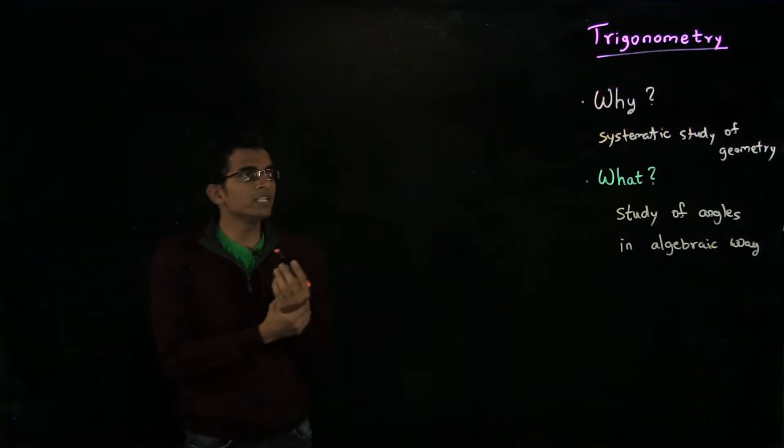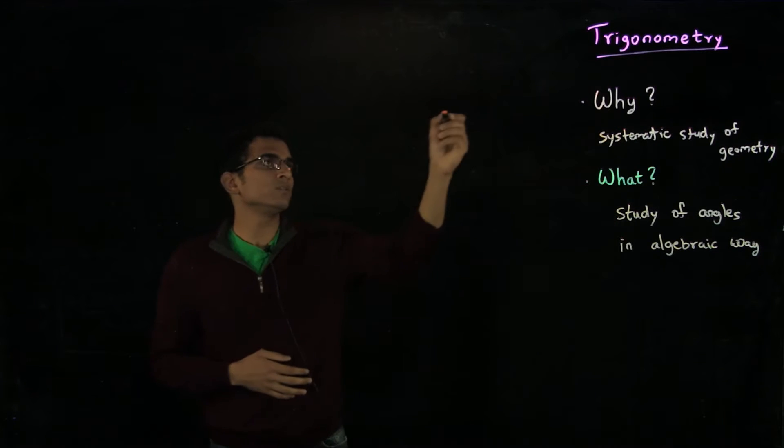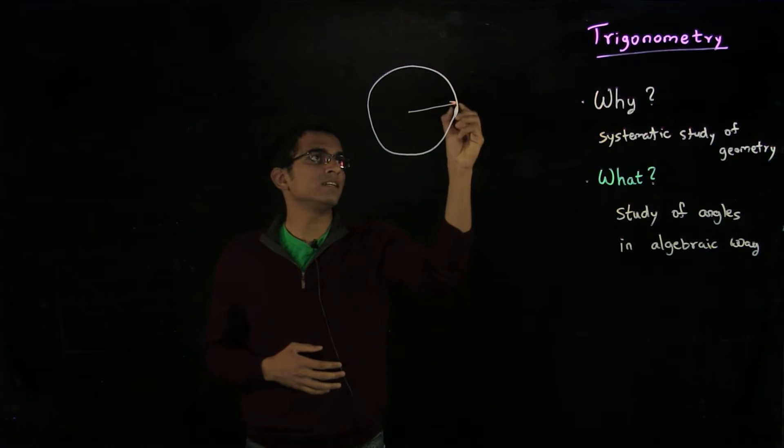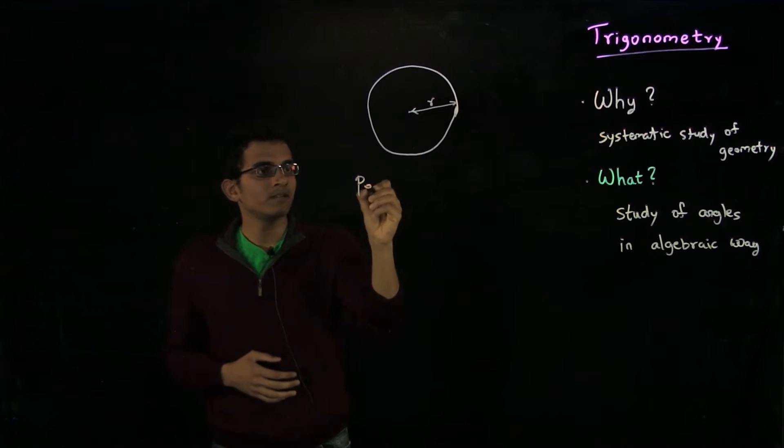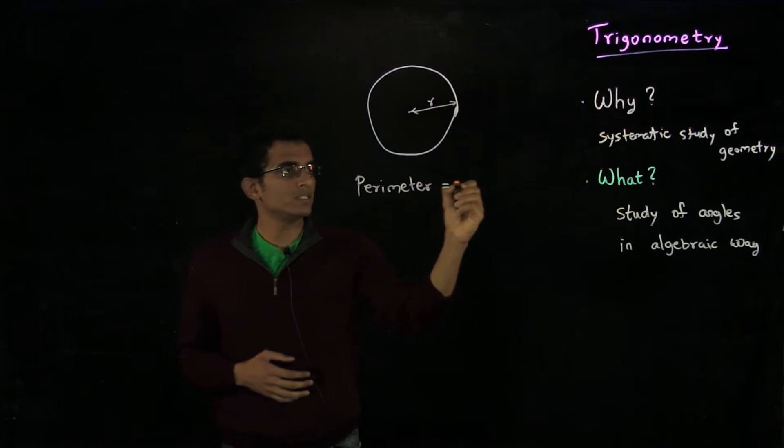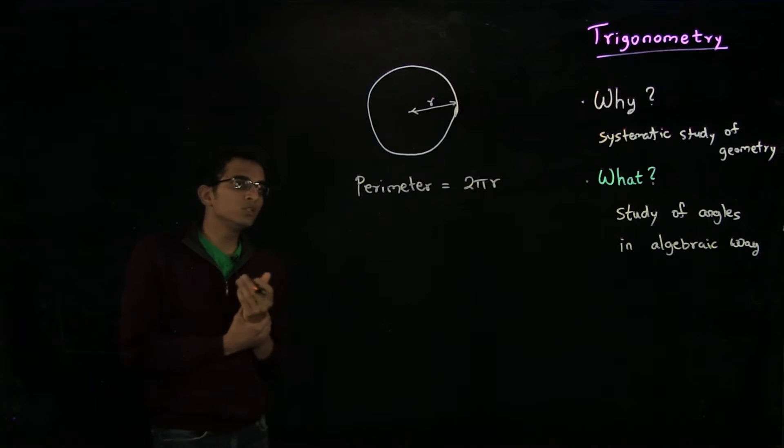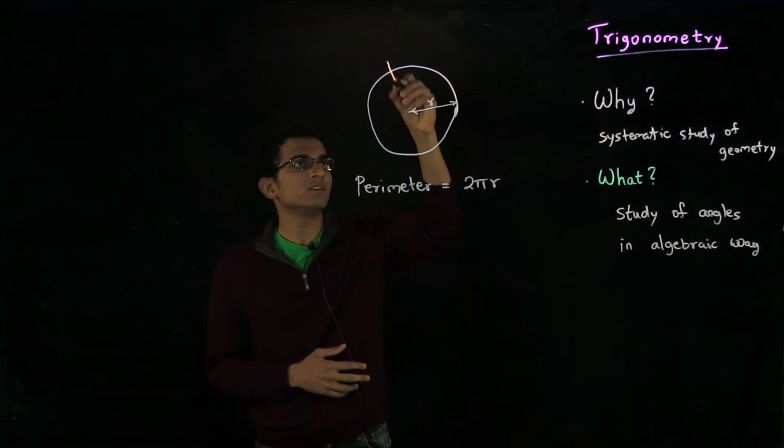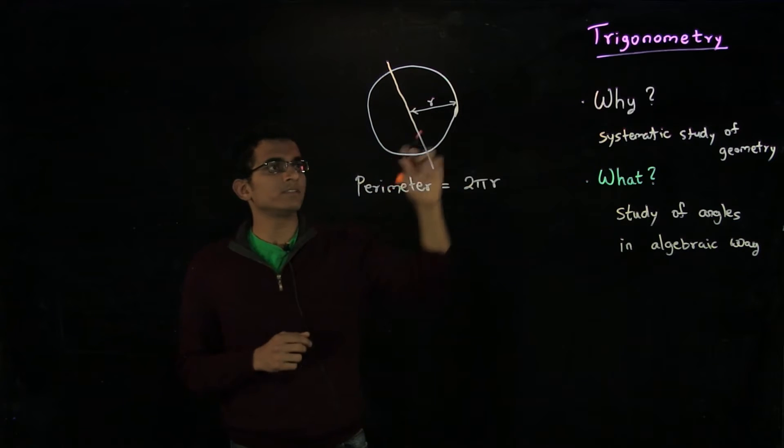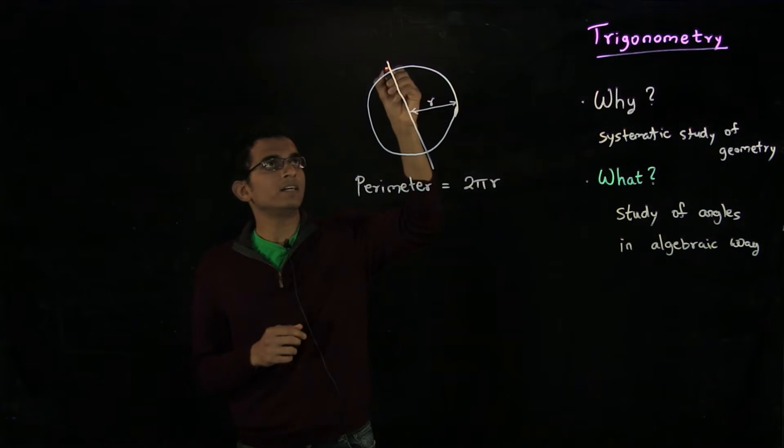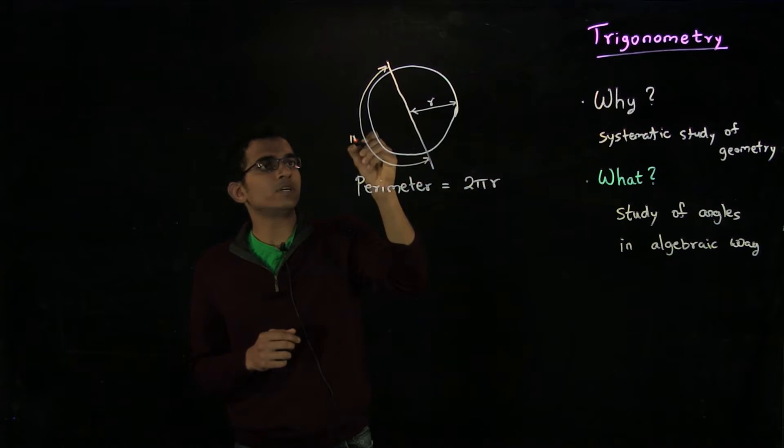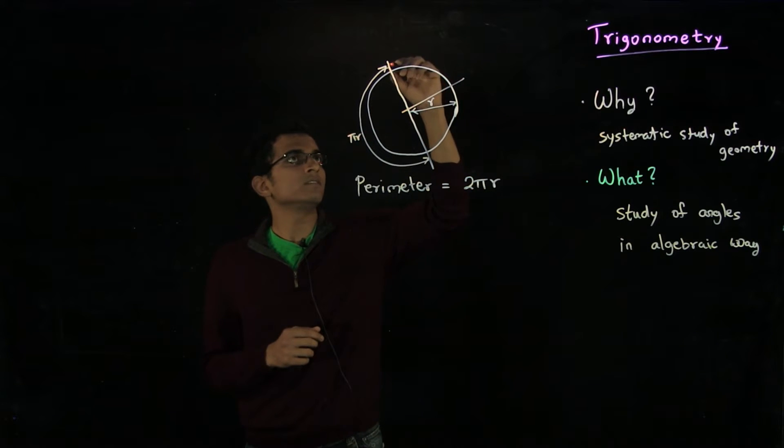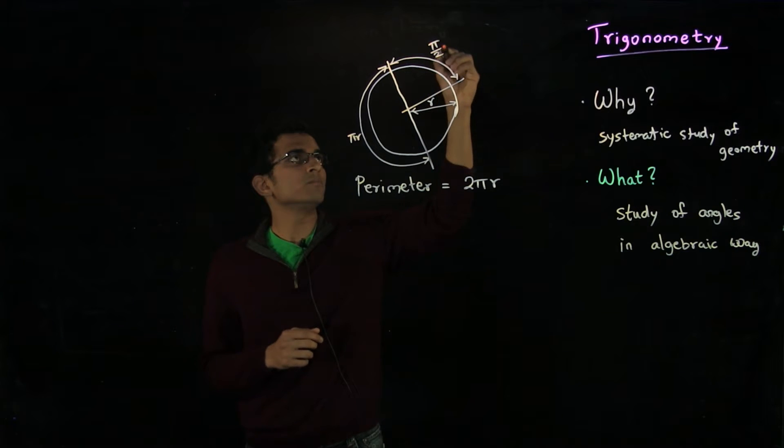Let us start with the very basics of what is an angle. You know from Euclidean geometry that if you have a circle of radius r, then the perimeter is equal to 2πr. Basic reasoning will tell you that if I take half of a circle, the length of the arc is πr. Similarly, if I take a quarter circle, this will be π/2 r.